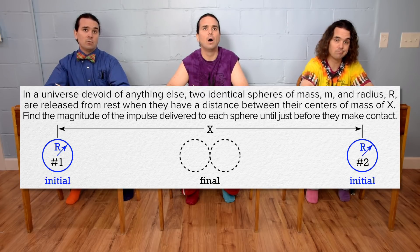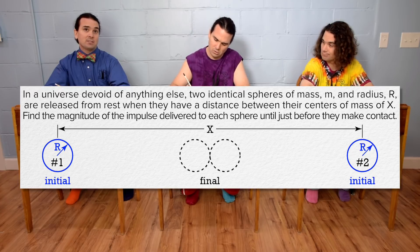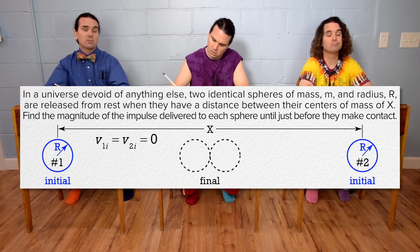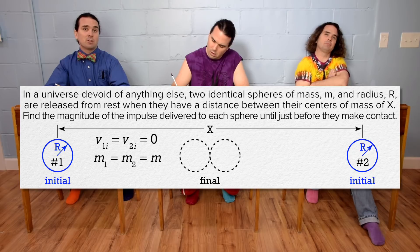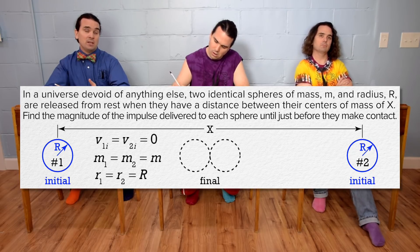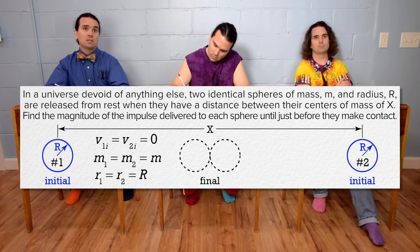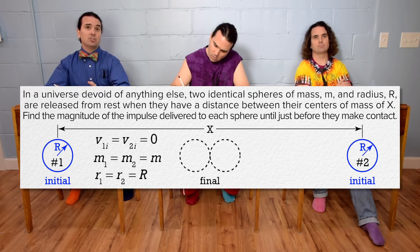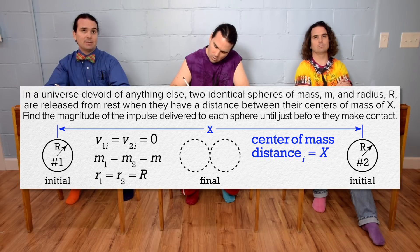There are two identical spheres which start from rest, so velocity initial of both spheres equals zero. Mass 1 equals mass 2 equals lowercase m, and the radius of each sphere, radius 1 equals radius 2 equals capital R. The initial centers of mass distance is capital X.